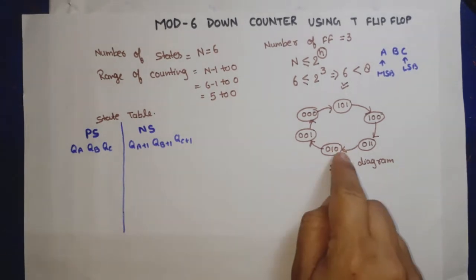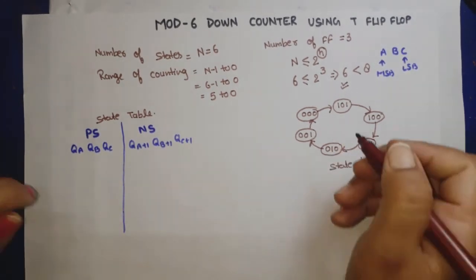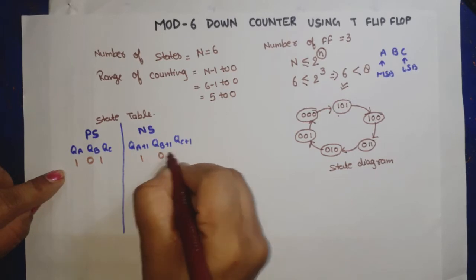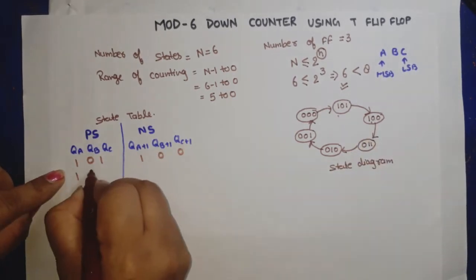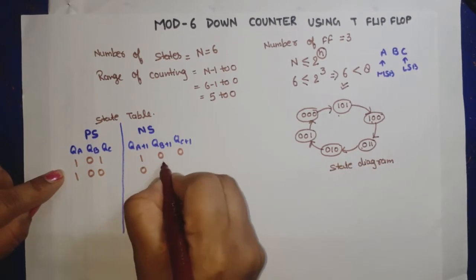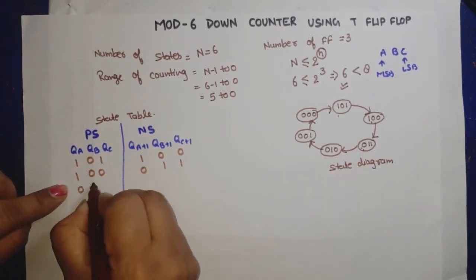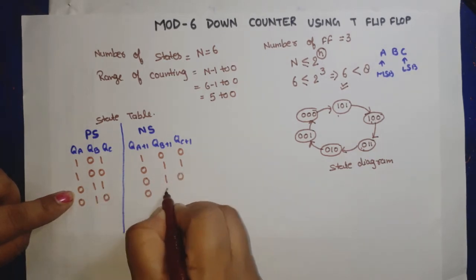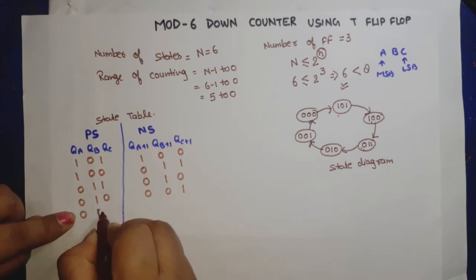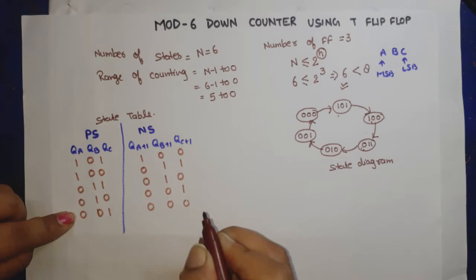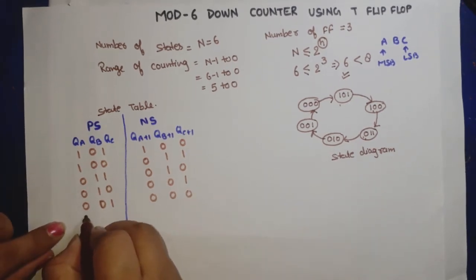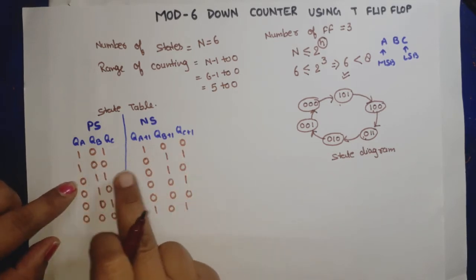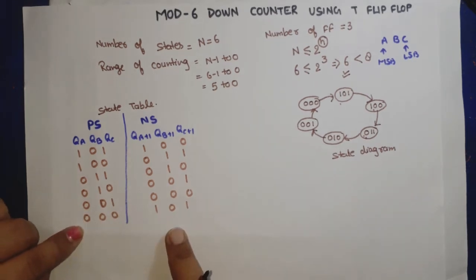According to the state diagram, when the present state is 5 (101), next state will be 4 (100). Present state 4, next state is 3 (011). Present state 3, next state is 2 (010). Present state 2, next state is 1 (001). Present state 1, next state is 0 (000). Present state 0, next state is 5 (101).